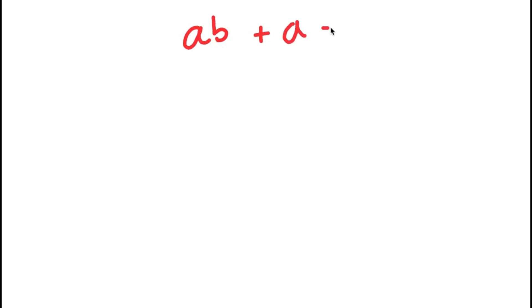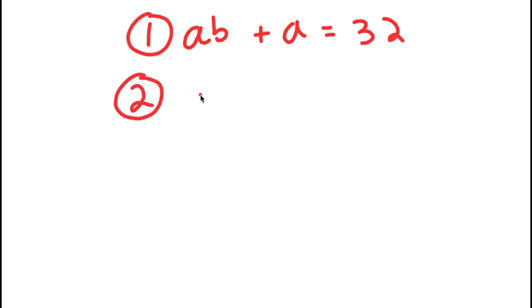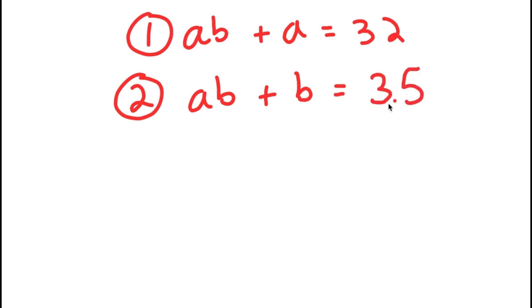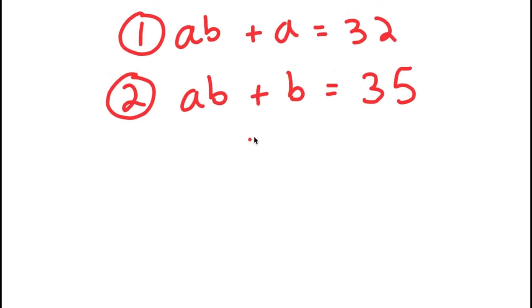In this video, I'm going to be solving a system of equations. I have two equations: my first is AB plus A is equal to 32, and my second equation is AB plus B is equal to 35. To solve the system of equations, I have to find the values of A and B.